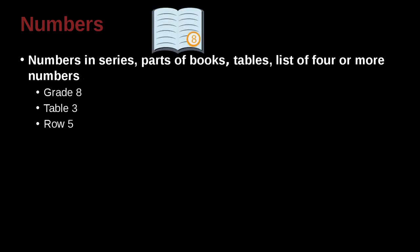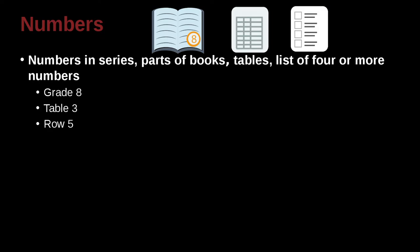Numbers and series, parts of books, tables, lists. Tables, lists, or four or more numbers. So for example, grade 8, table 3, row 5. These are examples of being parts of something bigger. So in that case, if it's a series, a list, or part of something bigger, then you use the number even though it's smaller than 10.